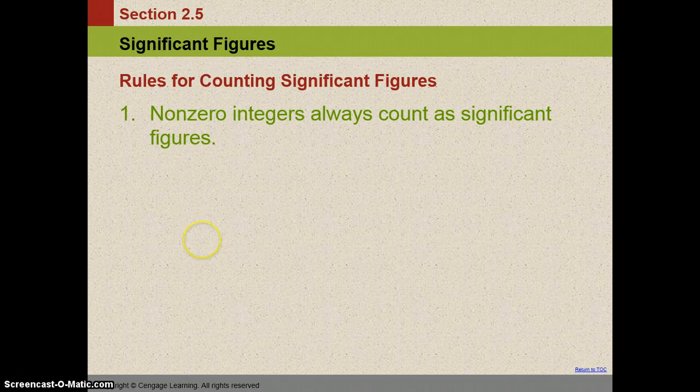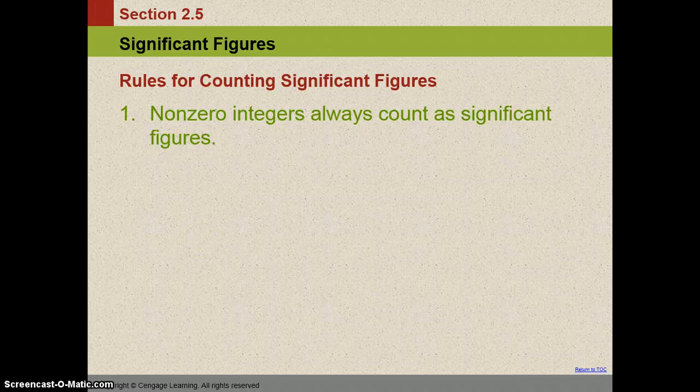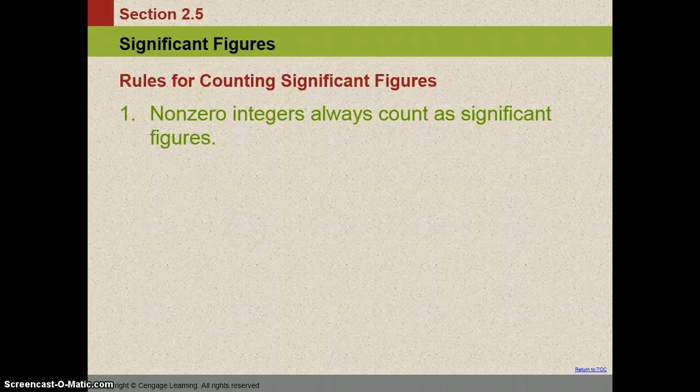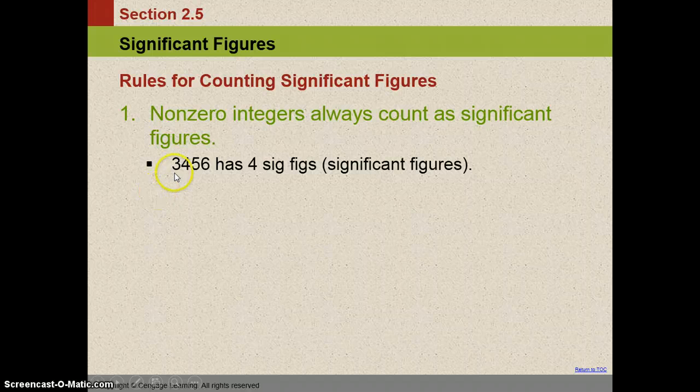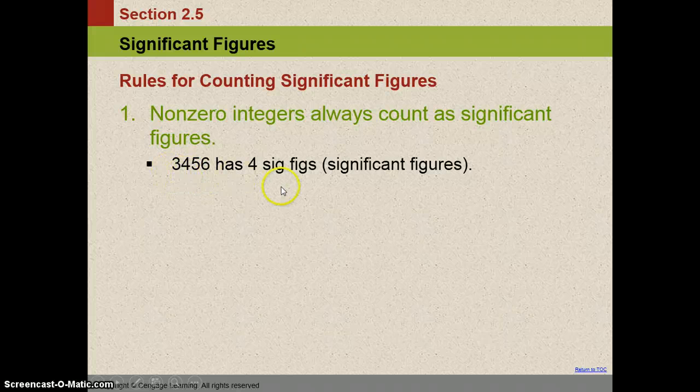Okay. Here are the significant figures. This is probably one of the most confusing things, but it's just rules. Just memorize the rules. So the first one we're going to talk about are non-zero integers. These are always significant. So in this case, 3,456, there are four sig figs or significant figures. All four of them are significant.